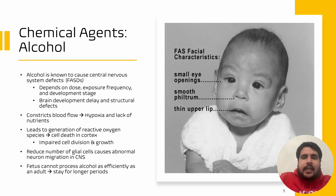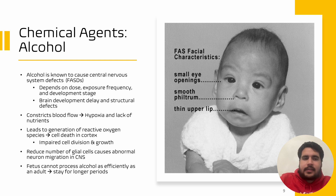Lastly, alcohol has also been shown to reduce the number of glial cells in the nervous system, and this impairs the ability of neurons to migrate in the central nervous system. Another thing to keep in mind is that the fetus or embryo cannot process alcohol as efficiently as an adult, so the alcohol actually stays in the fetus for a much longer time compared to an adult.